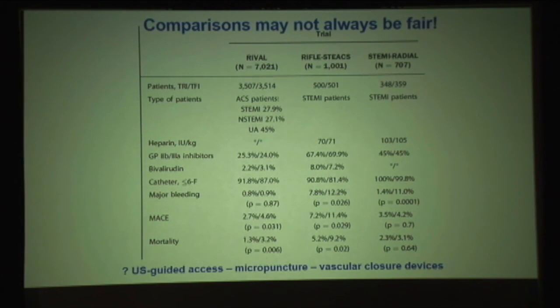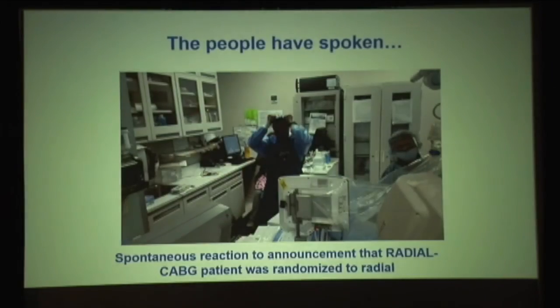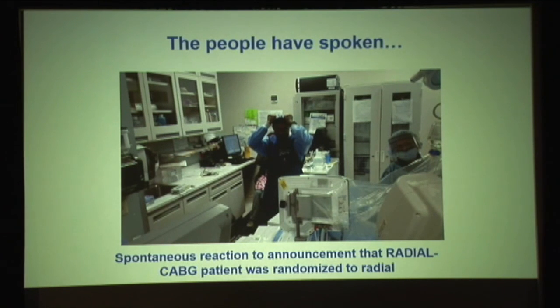Don't forget that the comparisons made pit radial against femoral done with high-dose GP IIb/IIIa inhibitors, without use of micropuncture or closure devices — which also can reduce complications. So radial for all? The answer is clear. And it's not just me — this is from the cath lab's spontaneous response when doing the study, with patients randomized through radial.